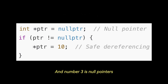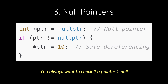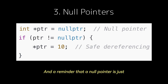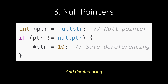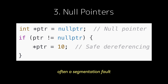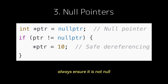Number three is null pointers. Always check if a pointer is null before dereferencing. A null pointer is simply a pointer that does not point to any valid memory location — usually null or nullptr. Dereferencing such a pointer will result in a crash, often a segmentation fault. So before dereferencing a pointer, always ensure it is not null by checking it with an if statement. This gives us safe dereferencing.